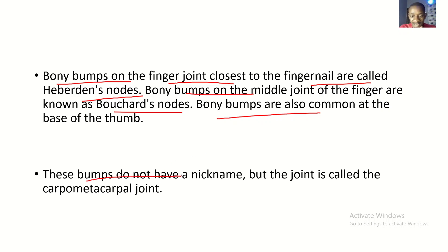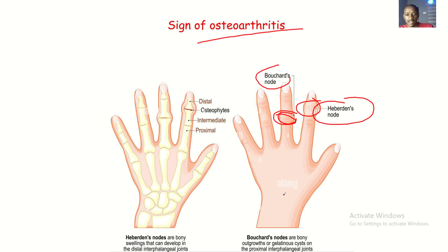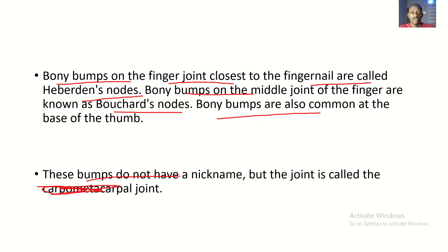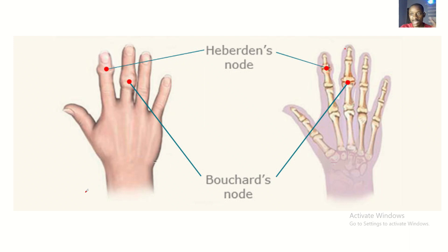These bumps do not have a nickname, but the joints where they occur — actually, wait, that's wrong. They actually occur at the interphalangeal joints, with the Heberden's nodes occurring at the distal interphalangeal joints. Not the carpal metacarpal joints — that was wrong.